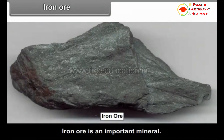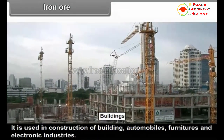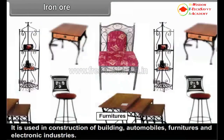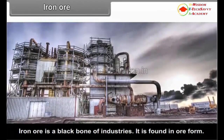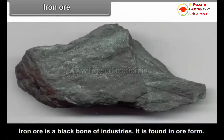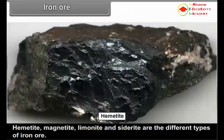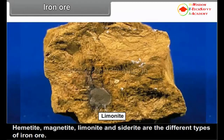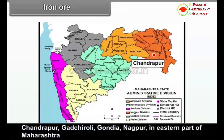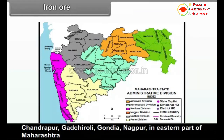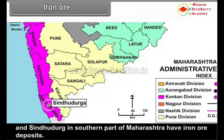Iron Ore. Iron ore is an important mineral used in construction of buildings, automobiles, furniture and electronic industries, and is considered the backbone of industries. Hematite, magnetite, limonite and siderite are the different types of iron ore. Chandrapur, Gadchiroli, Gondia and Nagpur in eastern Maharashtra, and Sindhudurg in southern Maharashtra have iron ore deposits.